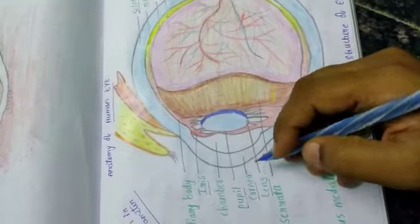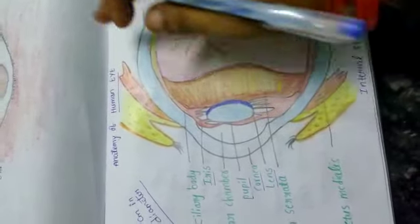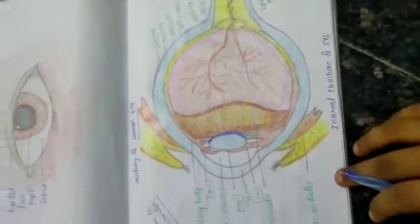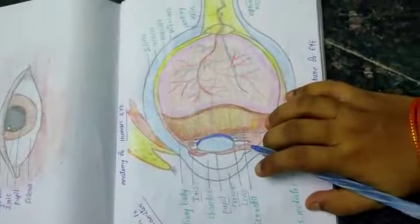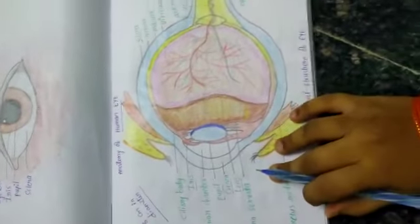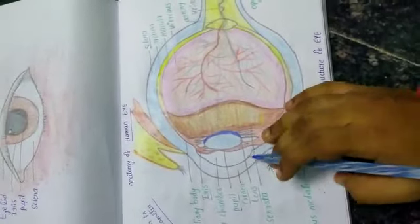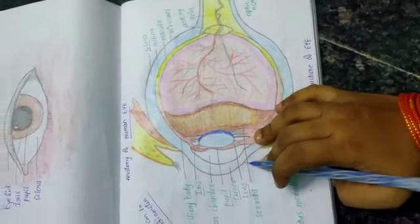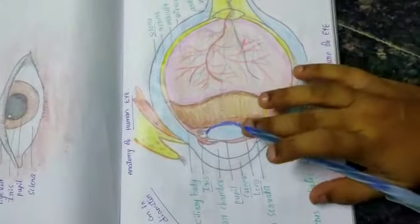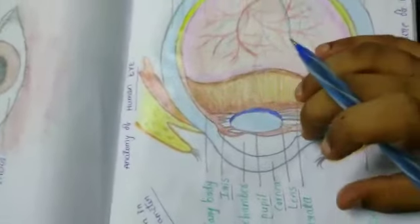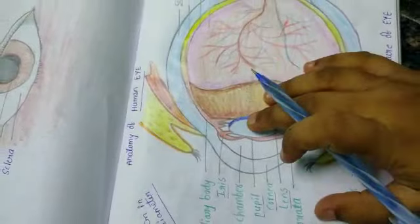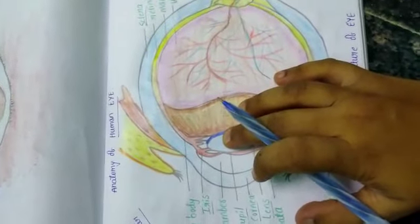Behind the pupil there is a transparent structure called lens. By the action of ciliary muscles, it changes the shape to focus on the retina. It becomes thinner to focus on distant objects and becomes thicker to focus on nearby objects. When we are observing near objects, the lens becomes very thicker, and when we are observing very long objects, it becomes very thinner.